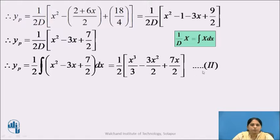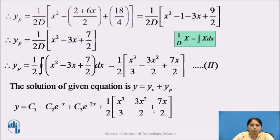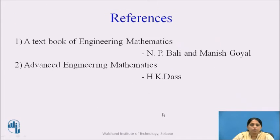Using equations 1 and 2, the general solution of the given equation is y = c₁ + c₂e^(-x) + c₃e^(-2x) + (1/2)[x³/3 - 3x²/2 + 7x/2]. Thank you.